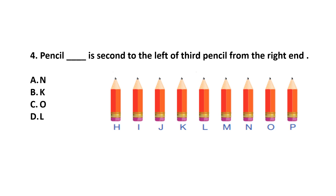Question number 4. Pencil dash is second to the left of the third pencil from the right end. First, we find the third pencil from the right end. Counting from the right: first, second, and N is the third pencil. Now, second to the left of N: first, second — that is L. Answer is option D, L.